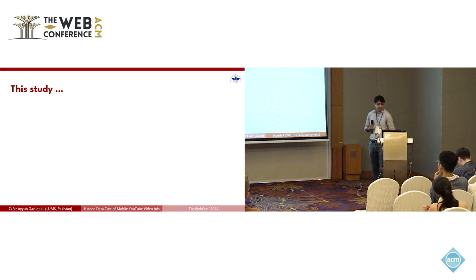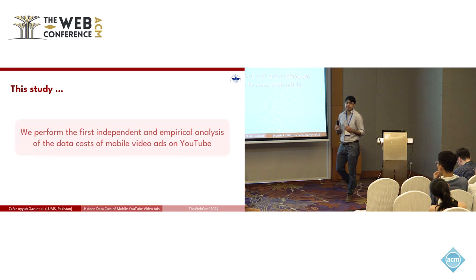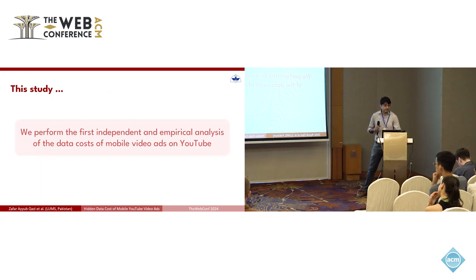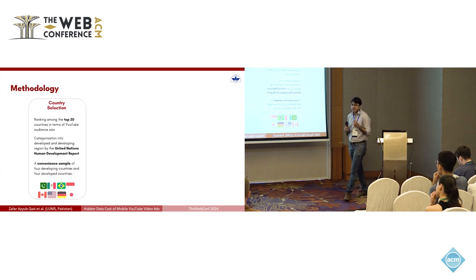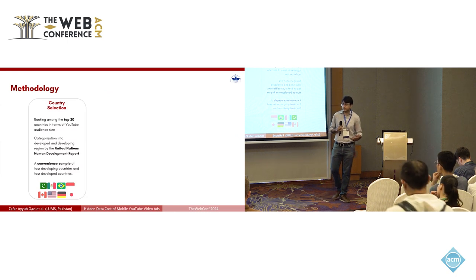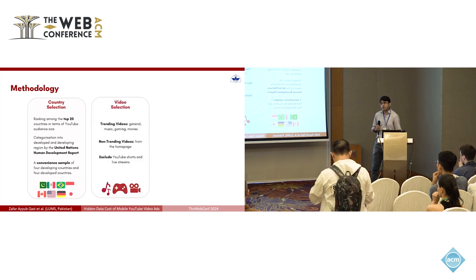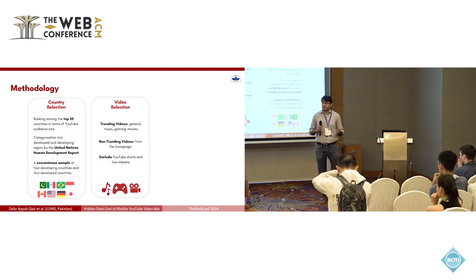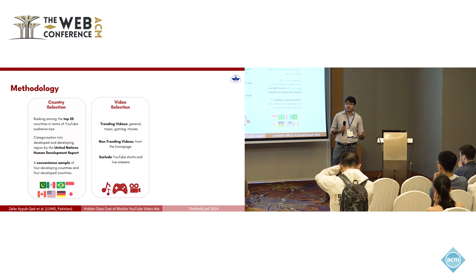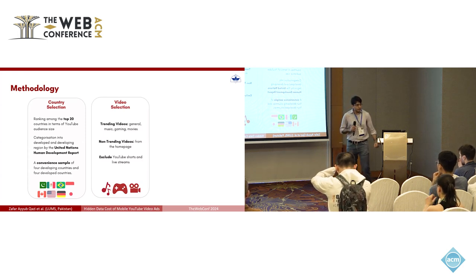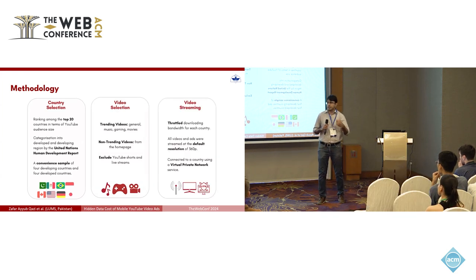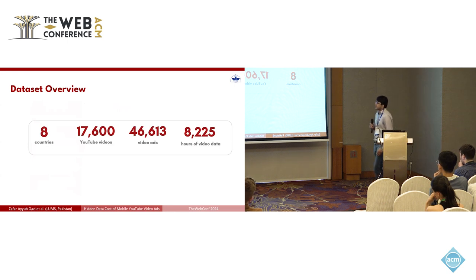Given this larger context, our goal in this study was to look at the data costs associated with watching video ads on YouTube. Our methodology was to first pick a convenient sample of eight countries — four developing and four developed — which are among the top 20 countries in terms of YouTube audience size. We looked at two types of videos: trending videos and non-trending videos available on the YouTube homepage. To emulate users accessing YouTube from different countries, we used a commercial VPN service. In total, we had a dataset of more than 17,000 videos and more than 46,000 video ads.